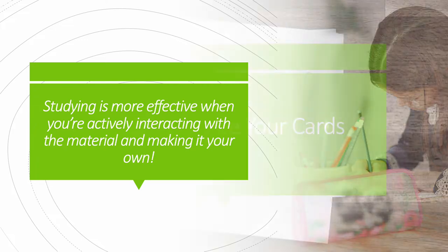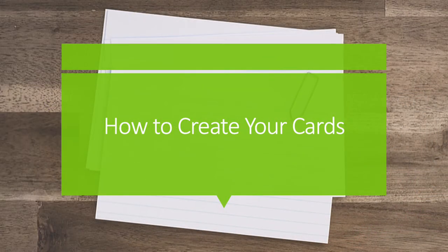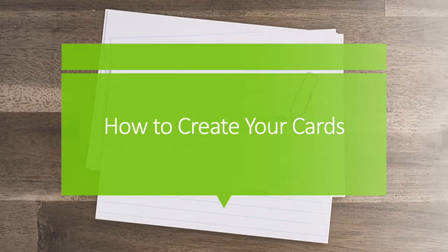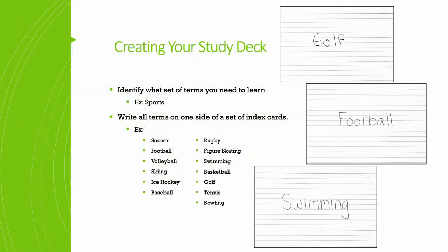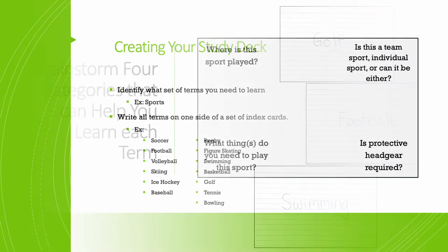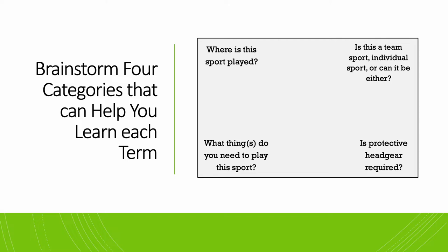So how do you create your dynamic flashcards? Creating your study deck: you first need to identify what set of terms you need to learn. For this example we're going to use sports, so you're going to write all terms on one side of a set of index cards — for example golf, football, and swimming. You're then going to brainstorm four categories that can help you learn each term.